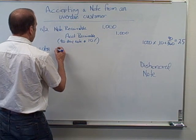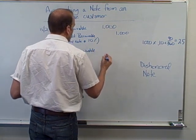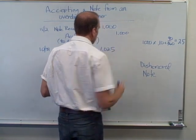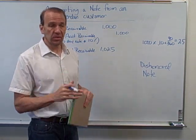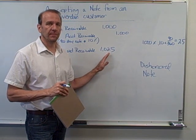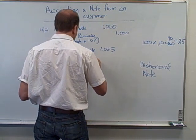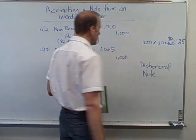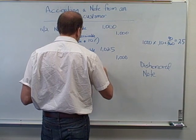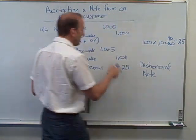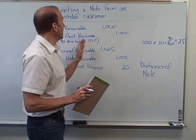To put it back into accounts receivable, we debit accounts receivable for one thousand and twenty-five dollars — notice this is different — because they owe us the interest too. That's why we added the interest to the receivable. Then we credit note receivable for one thousand dollars to eliminate it. We also credit interest revenue for twenty-five dollars, because we did earn that interest. They haven't paid us yet, but that twenty-five dollars is included in that accounts receivable balance.